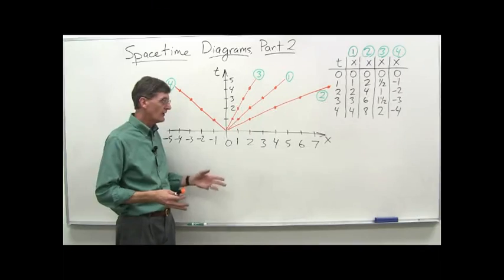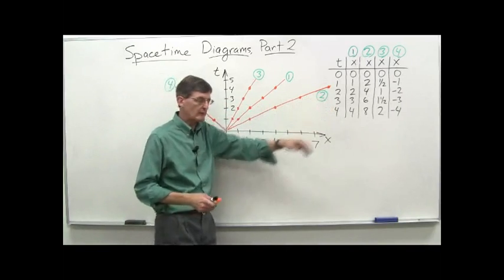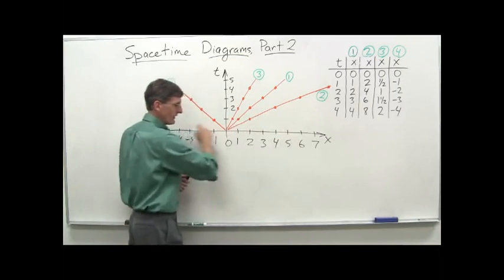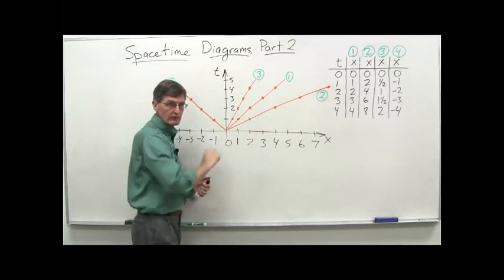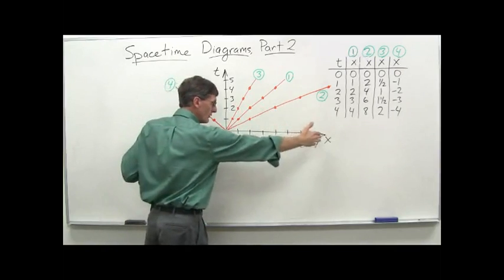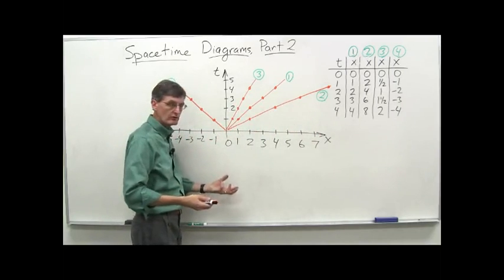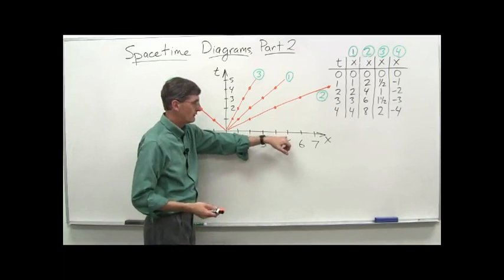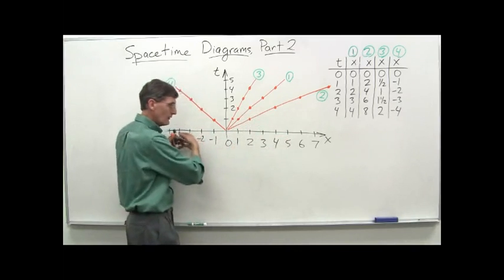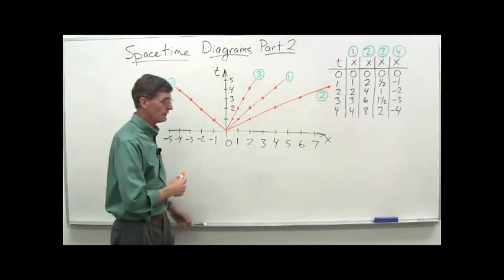Let's remind ourselves what a space-time diagram is. We have our spaceship — our car — traveling along the x-axis, giving off flashes at certain points in time. We have a grid or lattice of clocks all along the x-axis, so that when a flash occurs, a photograph is taken recording the location and the time on that clock. All the clocks along the x-axis are synchronized using a method reviewed in a previous video clip.